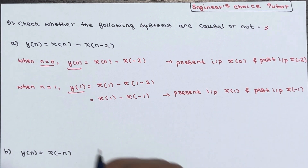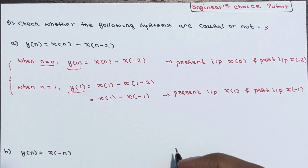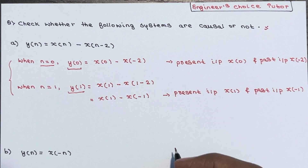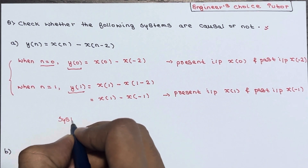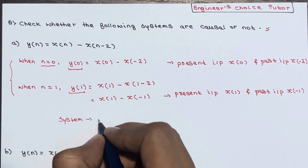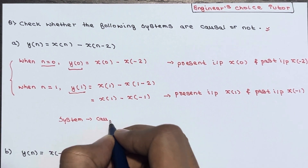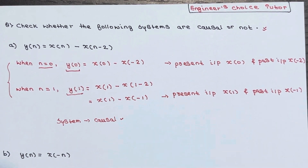From the above analysis, we can say that for any value of n, the system output depends on present and past inputs. Hence, the system is a causal system.